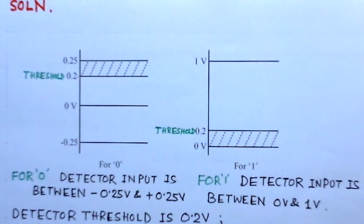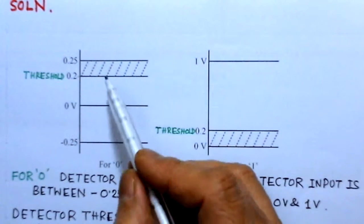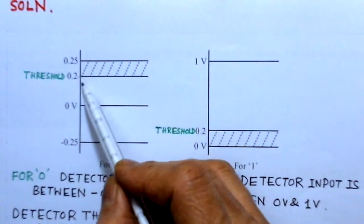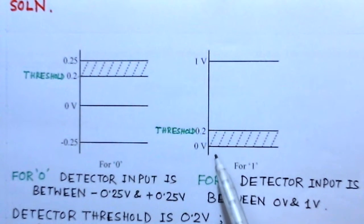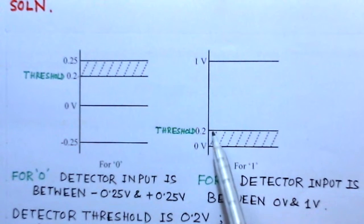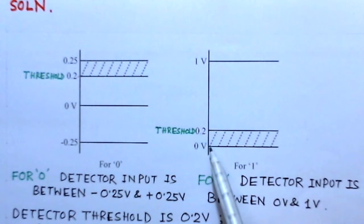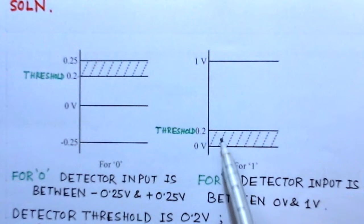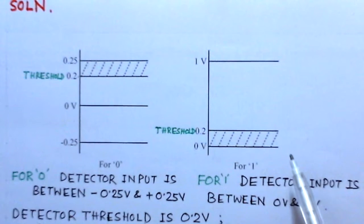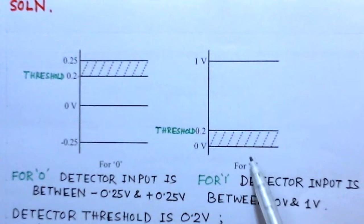You can see that there is probably an error in this shaded area. We can make an error between 0.2 and 0.25 volts — whether it is 0 or 1. Similarly, since the threshold is 0.2 volts, between 0 and 0.2 volts there will also be error in the detection of 1.